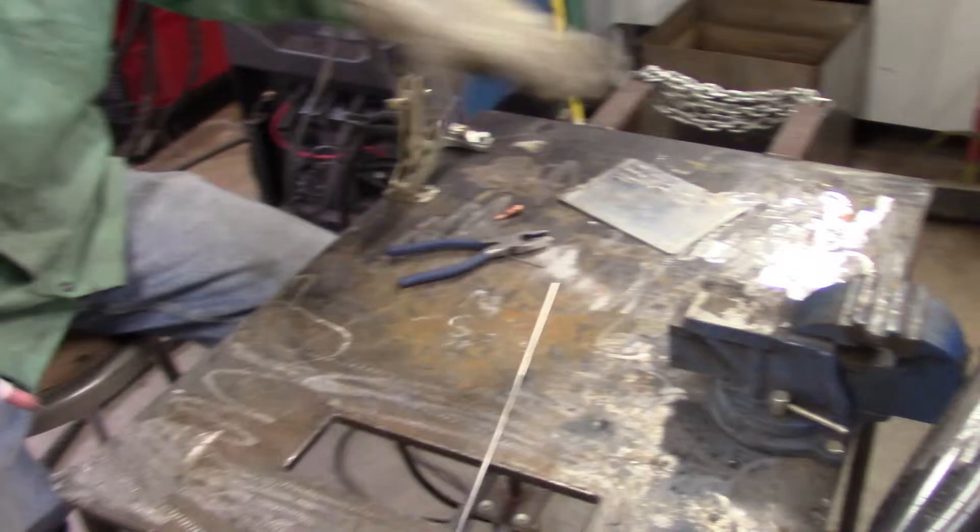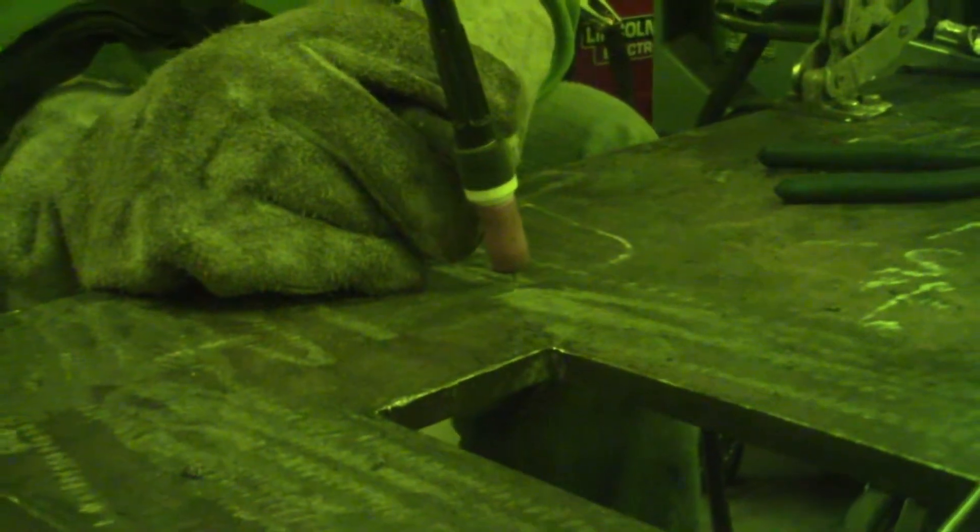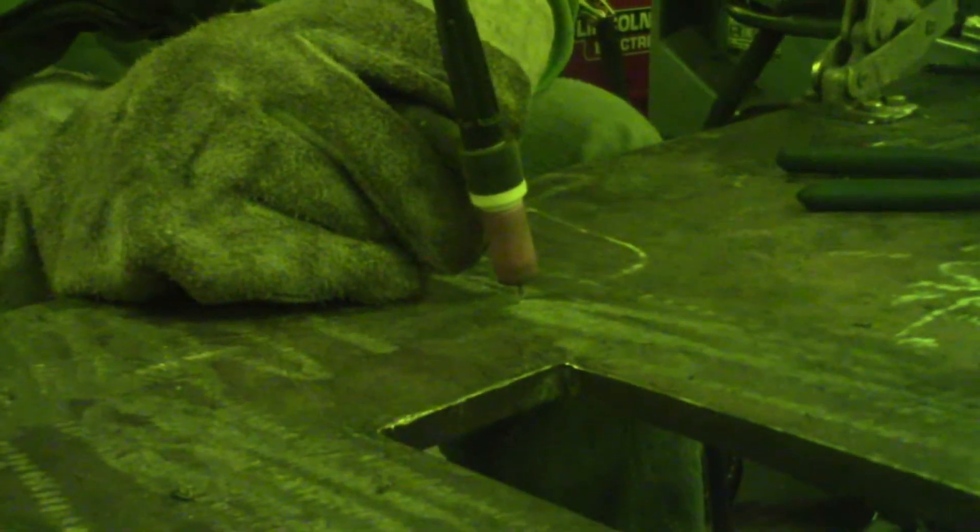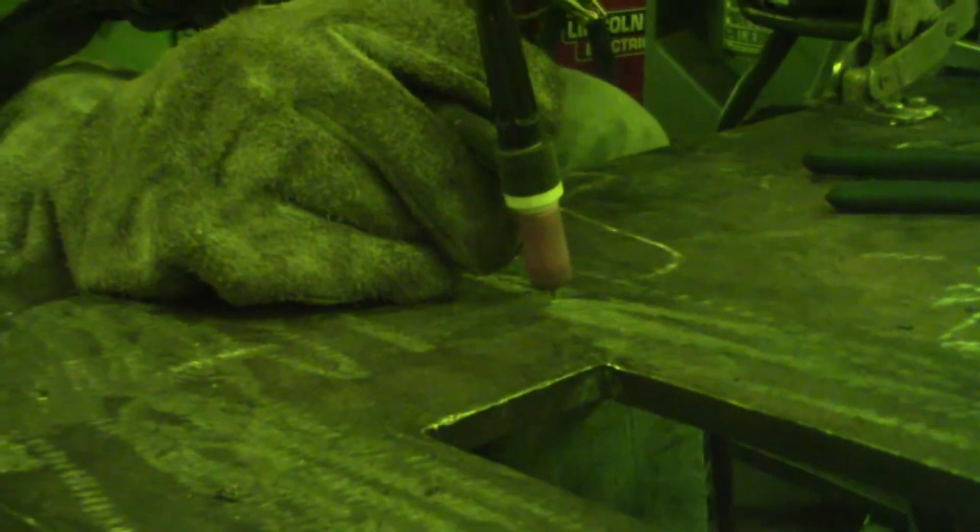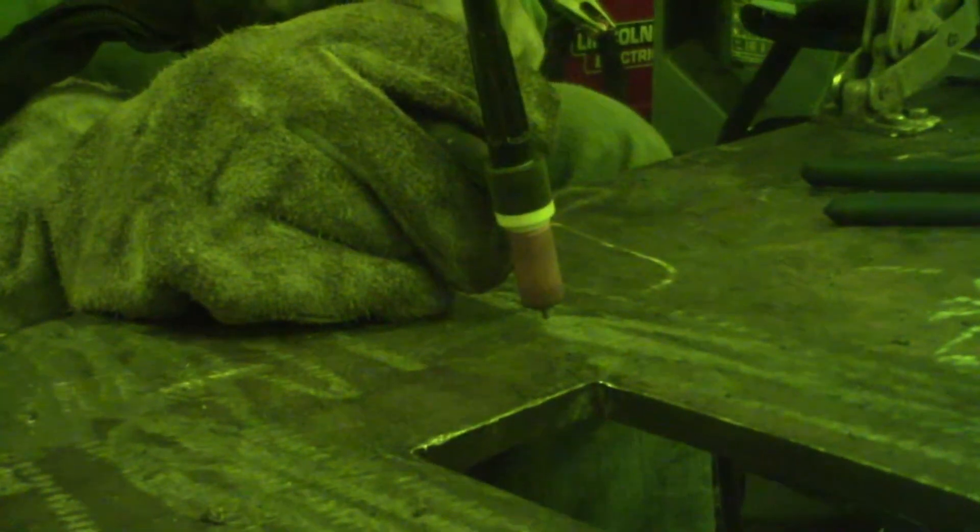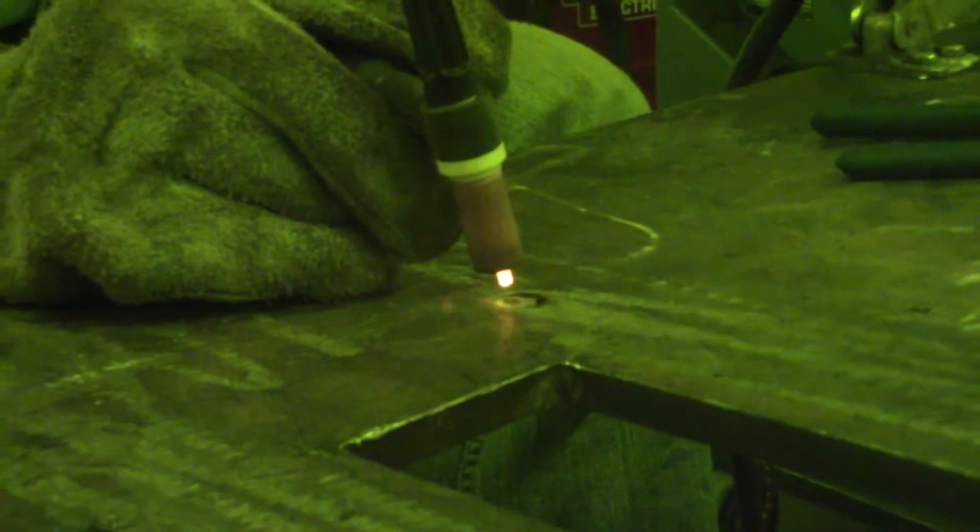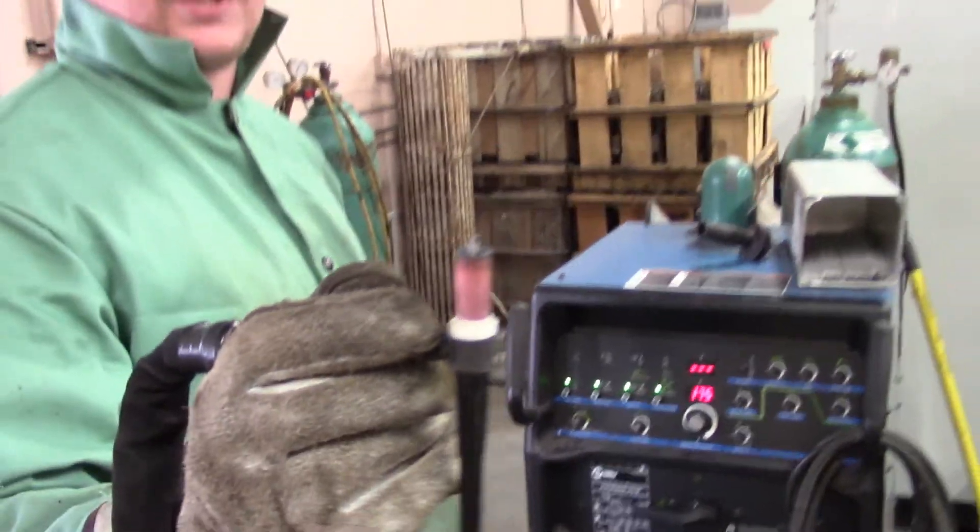We're on electrode positive now, so just go up to the table. We're just above the table, we're going to feather the rheostat of the foot pedal and just ball it up here. That's all it takes. There's the tungsten all balled up—it's got a little bit of contamination on it from the aluminum.